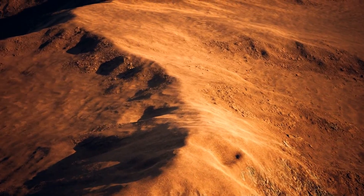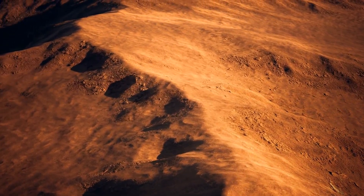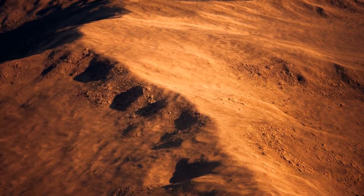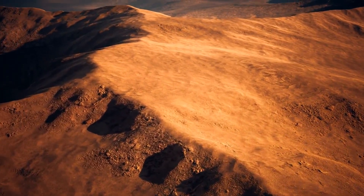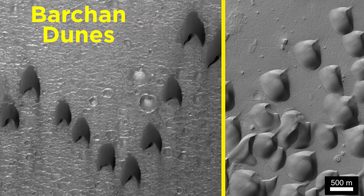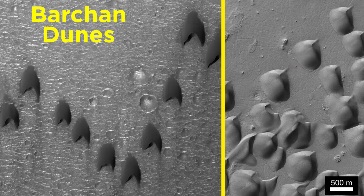Though Mars has a very thin atmosphere, it has sufficient wind to physically weather its basaltic bedrock and mold the resulting sediment into dunes. This image shows Martian barchan dunes, a type of parabolic dune. As we can immediately surmise, the wind is blowing toward the upper right corner. Additionally, notice the smaller longitudinal dunes on the backs of some of the larger dunes.